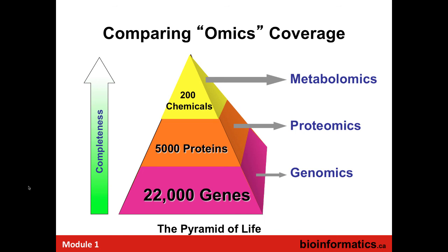In genomics, we routinely sequence human genomes and can measure and identify all 22,000 genes. In proteomics, between 5,000 and 10,000 proteins can be measured. In the case of metabolomics, it is possible to measure 10,000 or more features, but most people are considered fortunate if they can identify more than about 200 chemicals. When the metabolome has 50,000 to 60,000 compounds, measuring 200 is not great. This is a legitimate criticism of metabolomics, and there's active research to change that number from 200 to 2,000 or even 20,000.